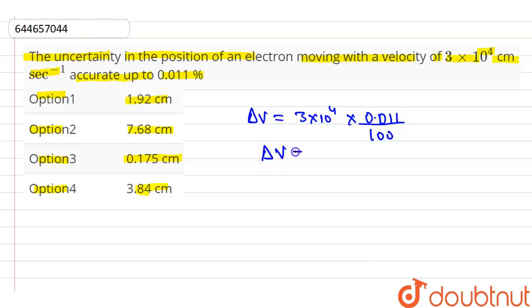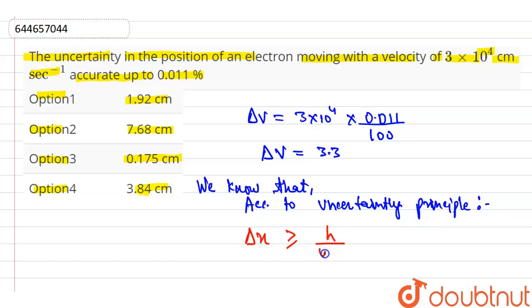Now solving, we get ΔV is equal to 3.3. We know that according to the uncertainty principle, Δx is always greater than or equal to h / (4π m × ΔV).